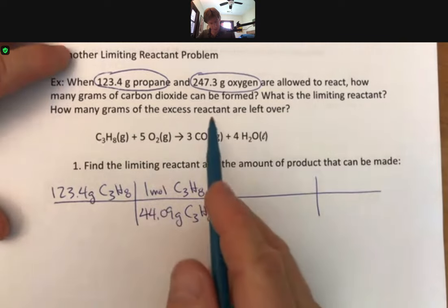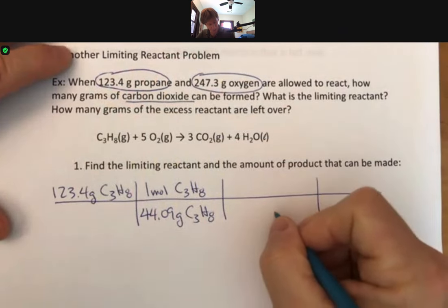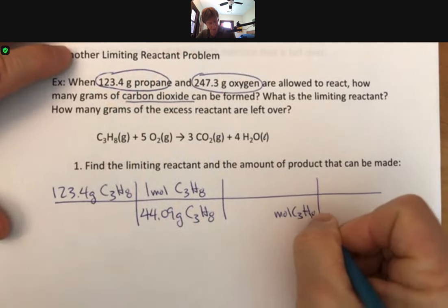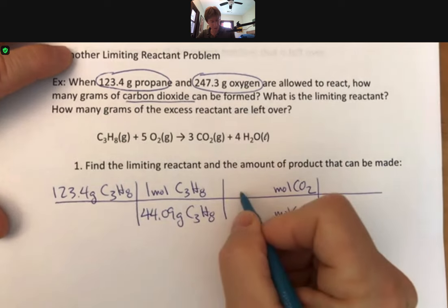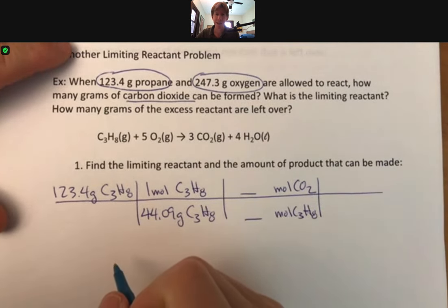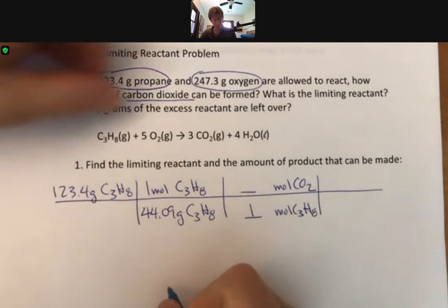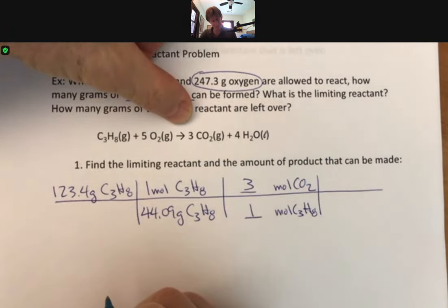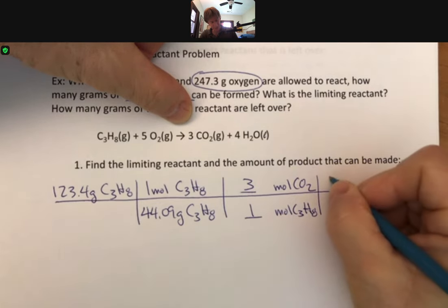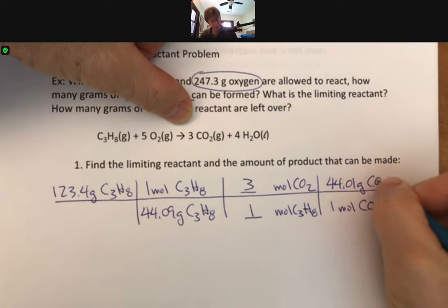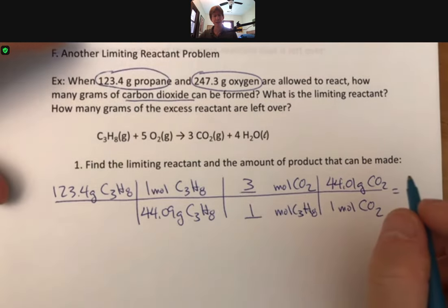Propane has a molar mass of 44.09. Put our grams of propane down here, put one mole, because that's what it's equal to, one mole of propane right there. We're being asked about carbon dioxide. So we're going to have moles of C₃H₈ down here and moles of carbon dioxide up top. And the numbers that go here are, say it with me, the coefficients in the balanced reaction.